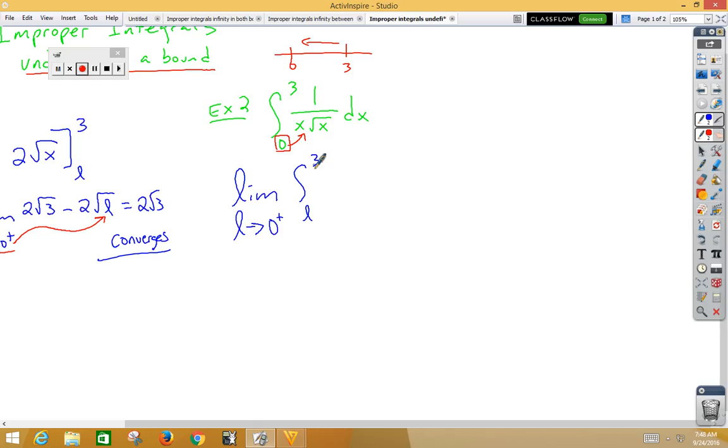Now, we're going to have to do a little algebra here. 1 over x root x can be thought of as 1 over x to the 3 halves because x to the first times x to the 1 half would be x to the 3 halves. And since that's on the bottom, let's move it to the top and think of it as x to the negative 3 halves. So we're integrating x to the negative 3 halves dx. Well, when you integrate x to the negative 3 halves, you get negative 2 over root x.